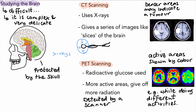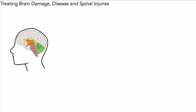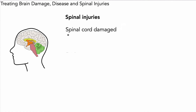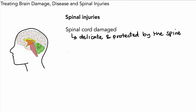The next thing we want to look at is treating brain damage, brain disease, and spinal injuries. Spinal injuries are injuries of the spinal cord, which is really important because it carries impulses from the brain to the rest of the body and is required for communication with the body. The problem is it's very delicate, and it's also protected by the spine, which is made of bone, making it difficult to access.